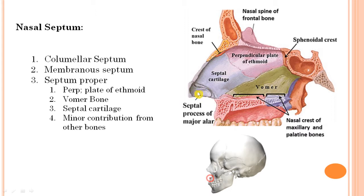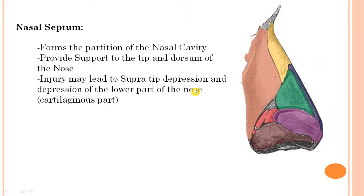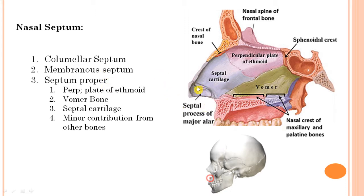The columnar septum is present in the columella, which is the area in between your nostrils. This columnar septum is mainly formed by the medial crus of the major alar cartilage. From the anatomy of the nose, we know the nasal bone, maxilla, lateral cartilage, major alar cartilage, and minor alar cartilage. The major alar cartilage is U-shaped, with a lateral crus forming the ala and the medial crus forming the columella — that is your columnar septum.